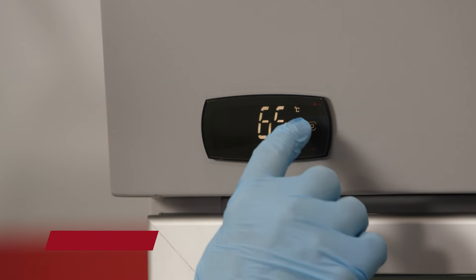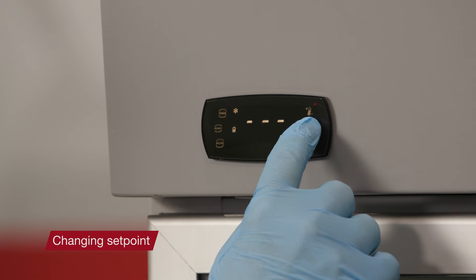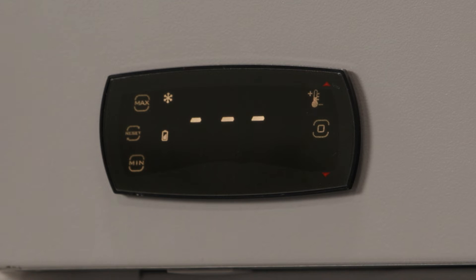In order to change the temperature setpoint, press and hold the program button for three seconds. When three dashes appear, the control panel has changed to direct access mode.